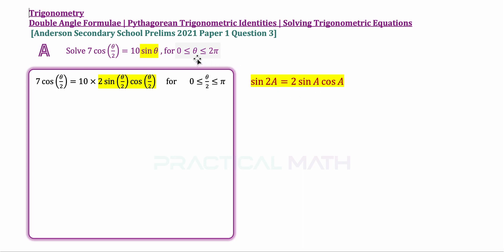At the same time, the range of angle theta from 0 to 2π, the angle of theta over 2 range will have to be converted as well. So now the range is from 0 to π inclusive after we divide by 2 on the left and right of each range. We now do a simple expansion and shifting to the left, and factoring out cosine theta over 2. Open the brackets, we now have 7 minus 20 sine theta over 2 close bracket equals 0.